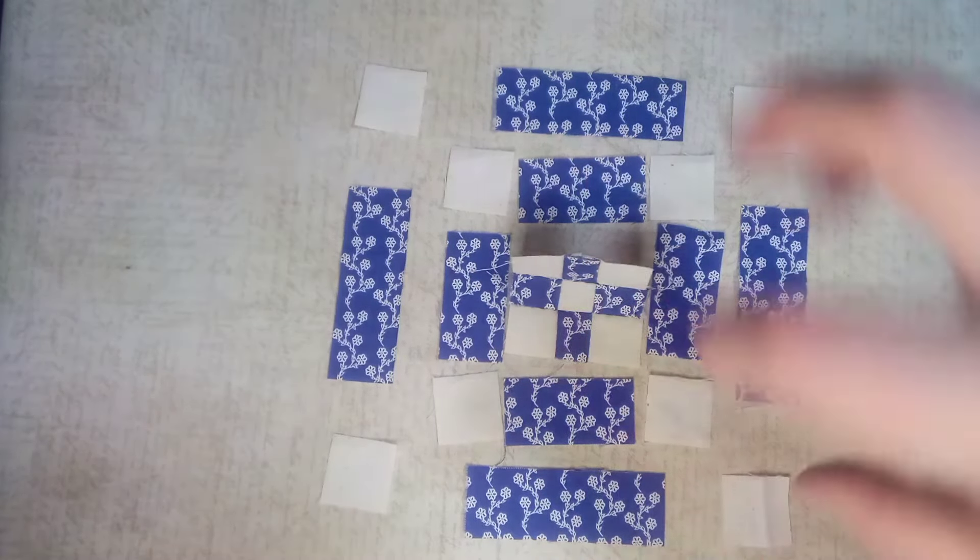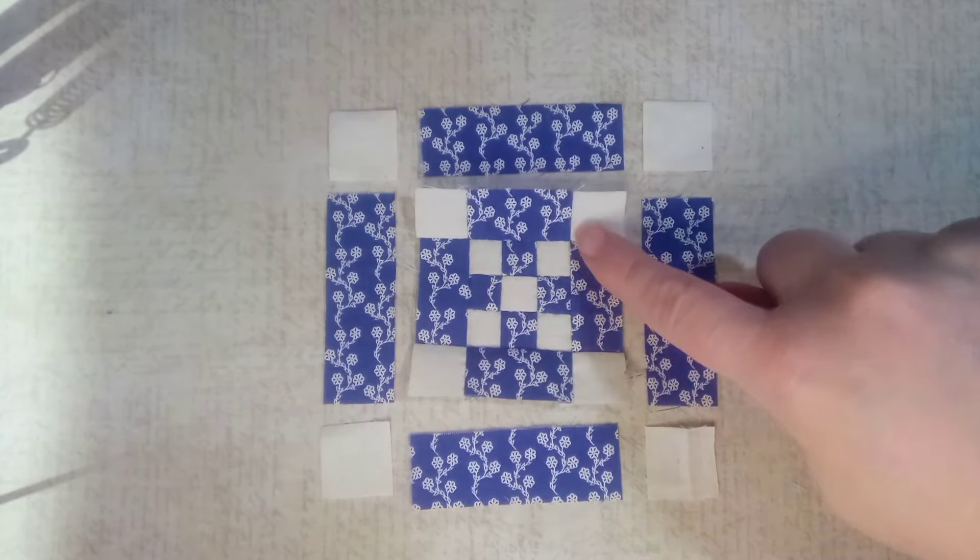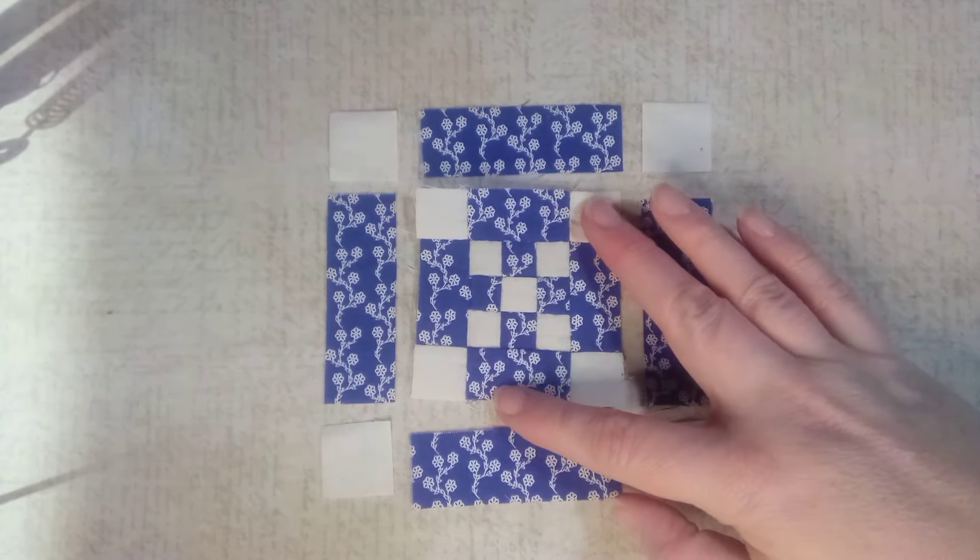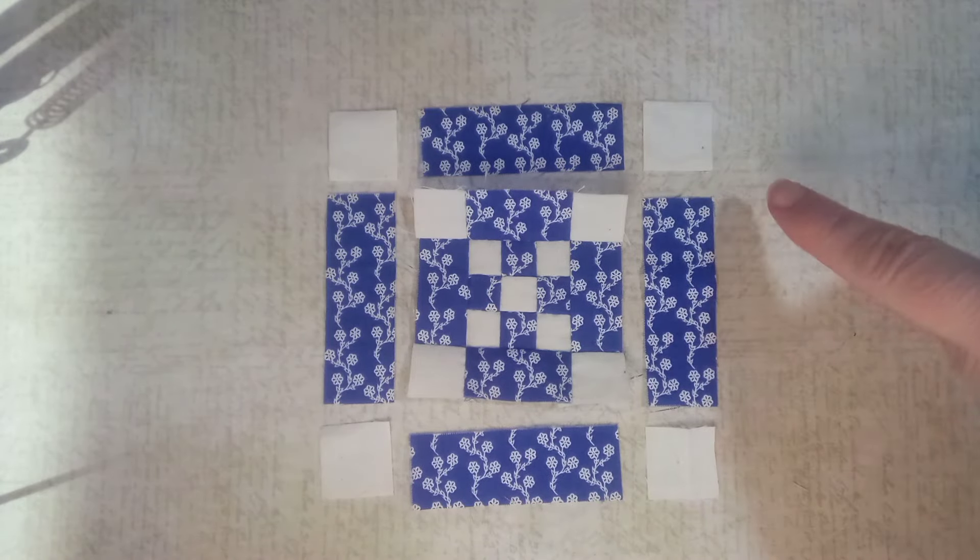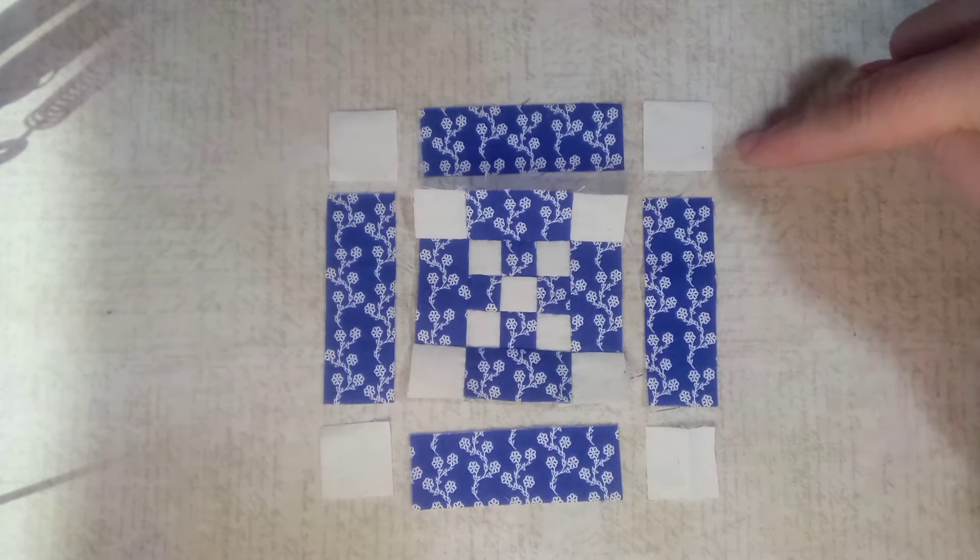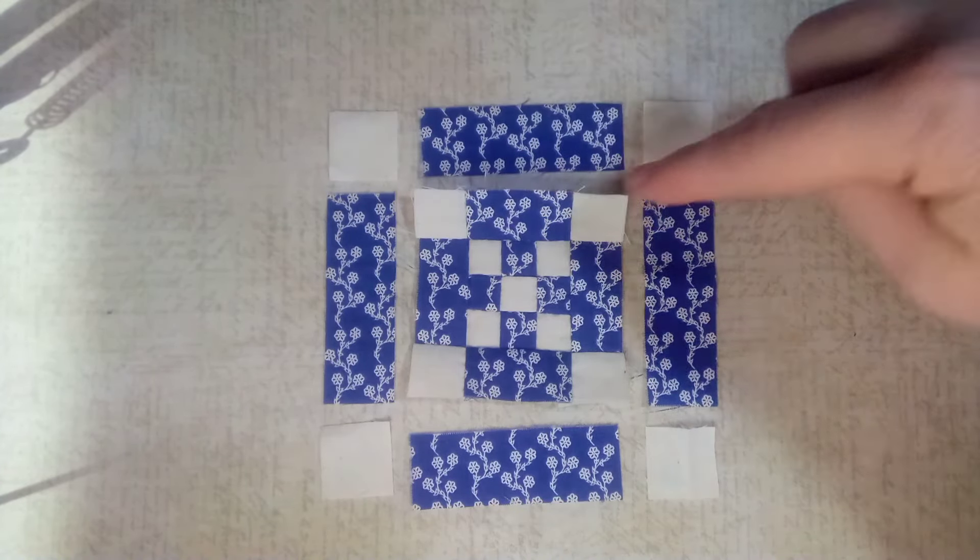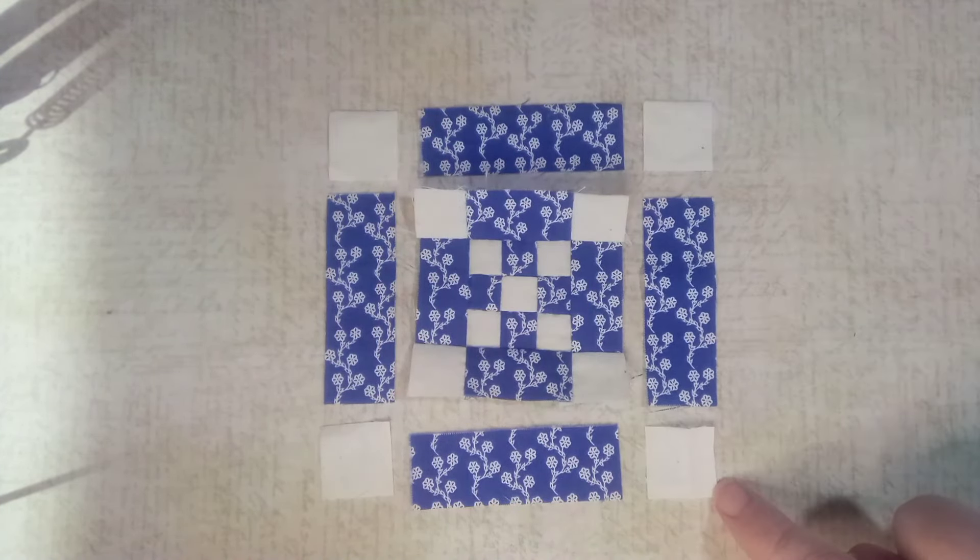The next row has been sewn on to the center of this block, and you can see it's coming together really well. Now we're going to do the same thing for this next row. So we're going to do each row one, two, three, one, two, three, one, two, three.